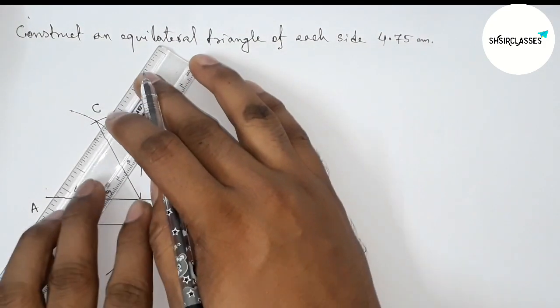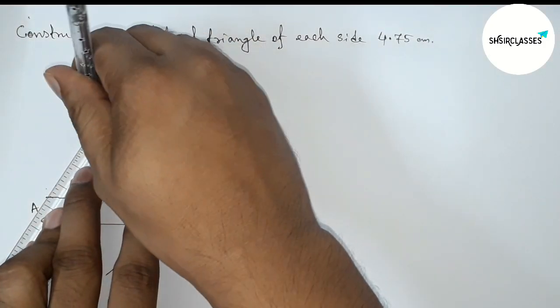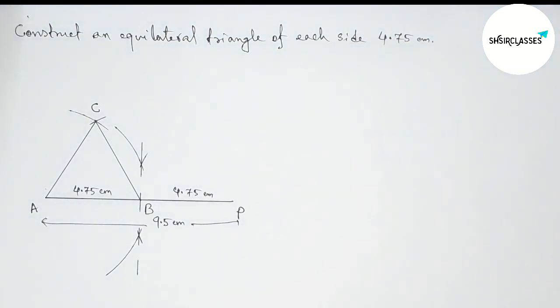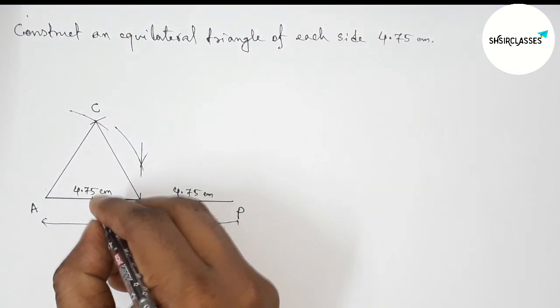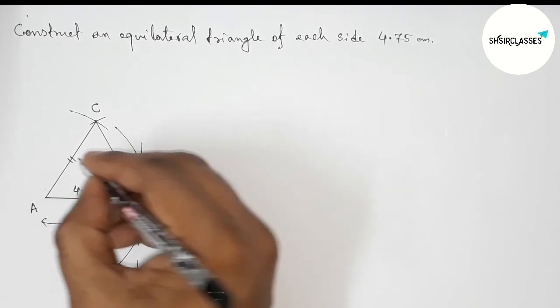Then joining the side AC to get the equilateral triangle. And we know that all the sides of an equilateral triangle are equal.